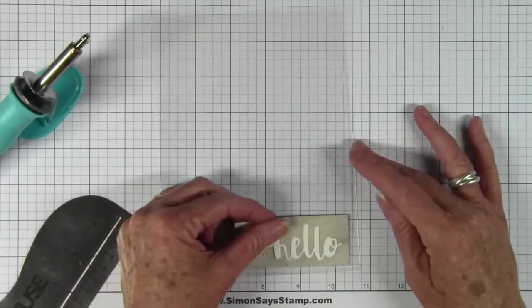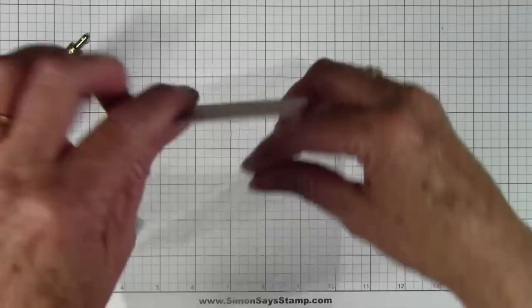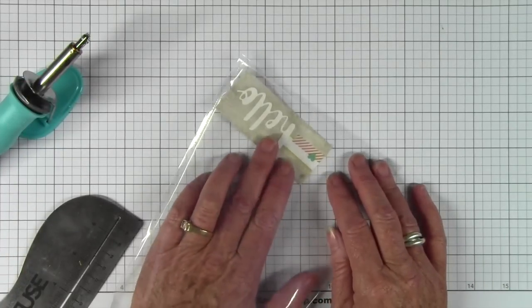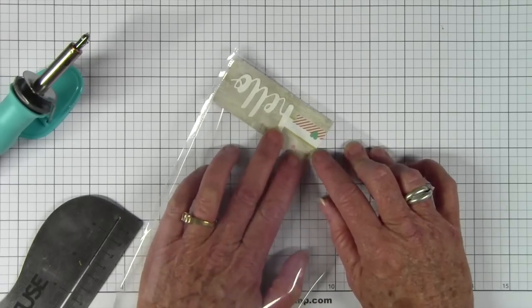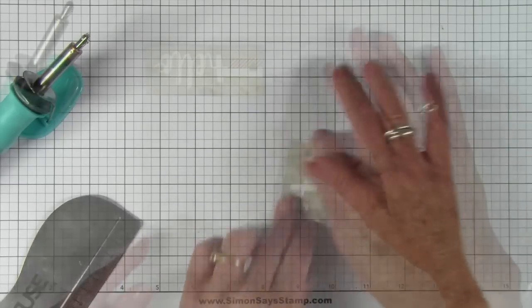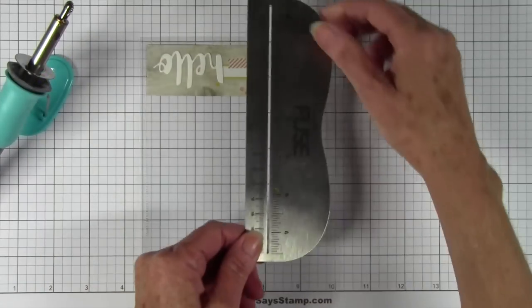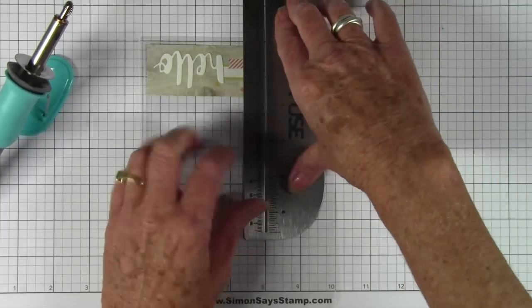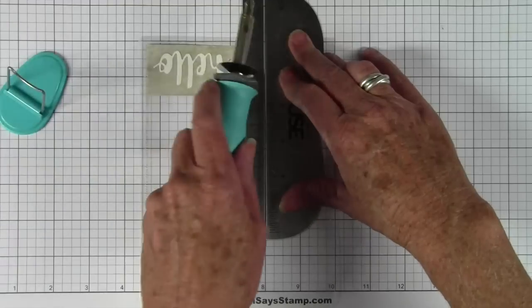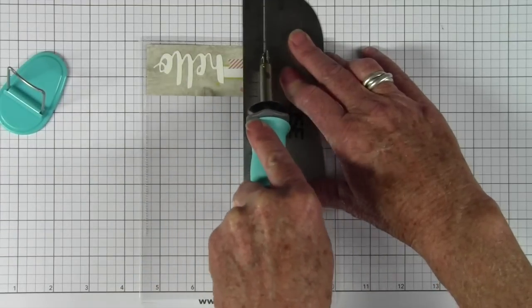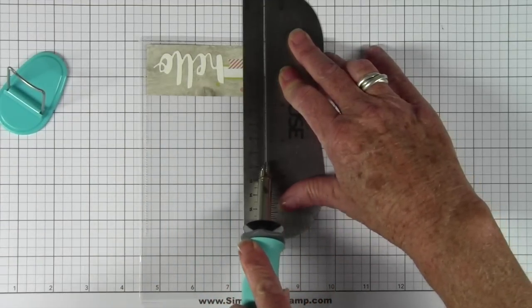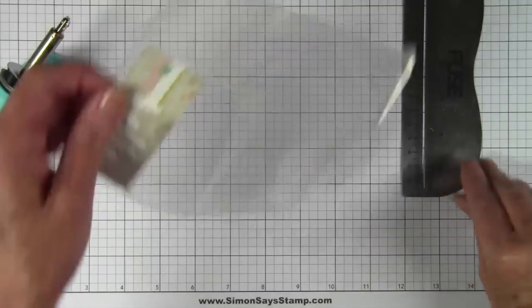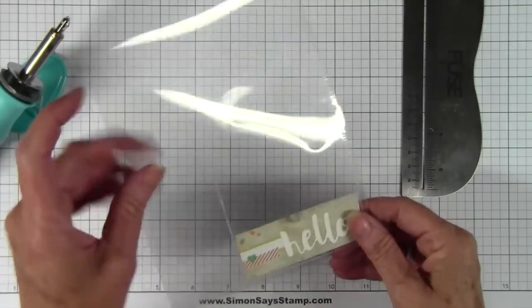So what I can do now is to go ahead and, actually I can go ahead and just lay this in here since it's the start of my little shaker card here. So once I have that lined up, I'll go ahead and lay my ruler down. And now I can go ahead and seal the side of my little area.